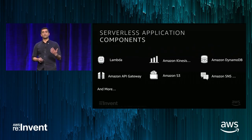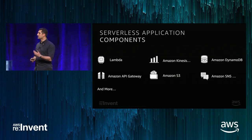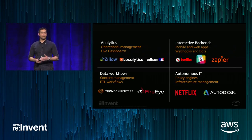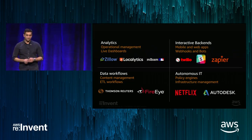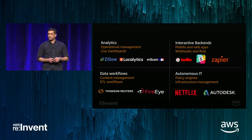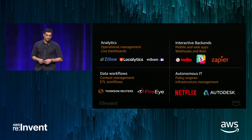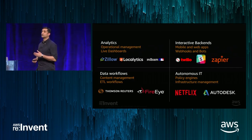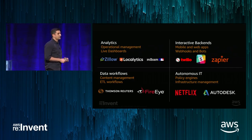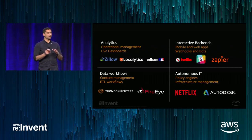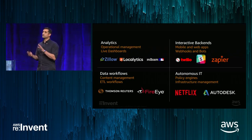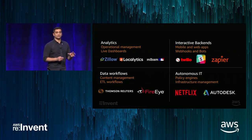To give you a few examples, we have customers innovating on serverless across a variety of categories. Zillow and Localytics build analytics applications and dashboards using API Gateway and AWS Lambda. Twilio and Splunk build interactive backends, mobile and web apps, and webhooks. Thompson Reuters and FireEye build data workflows including content management. Netflix and Autodesk use serverless to build autonomous IT, policy engines, and infrastructure management. Serverless exposes a very basic, event-driven programming model which fits into modern microservices architectures and enables customers to move faster.